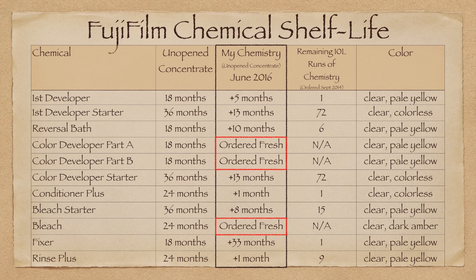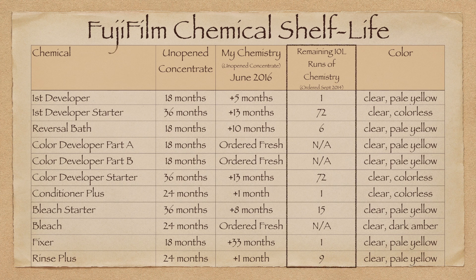As you can see, my chemistry was anywhere from 1 to 33 months past the recommended time frame by Fujifilm. The next column shows how much of my original chemistry purchased in September 2014 I have left in terms of the number of 10-liter batches I can make — in other words, how many occasions can I run this process before I run out of chemistry? The last column describes what viable chemistry should look like. The take-home message is that the unopened chemistry is viable even months after being produced and beyond what Fujifilm says is the maximum amount of time that the chemical will remain usable.